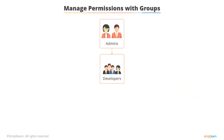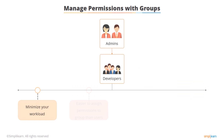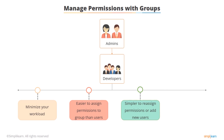You should always manage permissions with groups. This will minimize your workload drastically, as it's easier to assign a permission to a group than to many individual users – one change to a group updates permissions for multiple users. It's also simpler to reassign permissions if a user changes responsibilities. For example, if a developer moves to the admin team, you just move their user account from the developer group to the admin group. Using groups also makes it easier to keep track of your security configuration – if an auditor asks who has administration access to a particular EC2 instance, you can simply show them the group's user list.